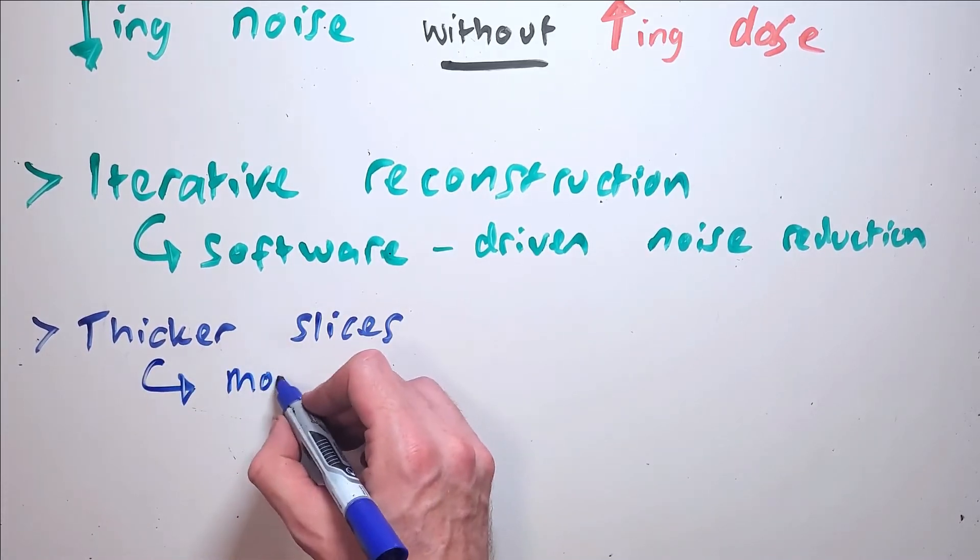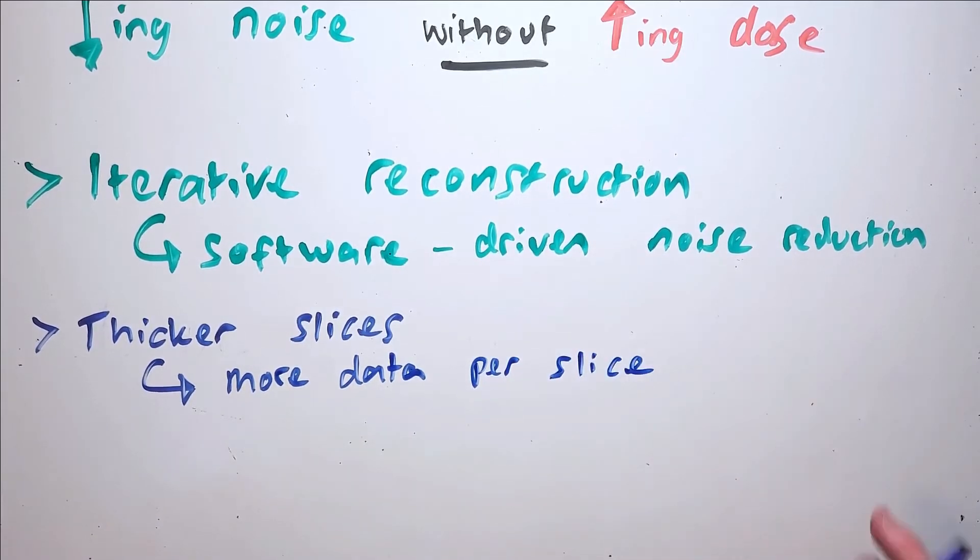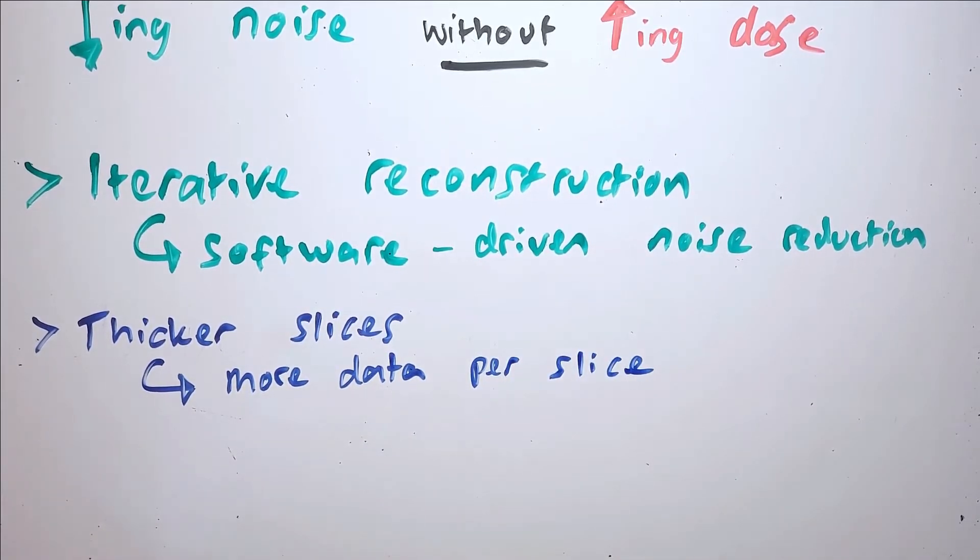Another simpler way to reduce noise on the software side is to simply build thicker slices from our data set. Because each thick slice is comprised of a greater volume of data than a thin slice would be, noise in that data is suppressed when those thin slices are averaged into a thicker slice. The downside of this is a loss of spatial resolution.